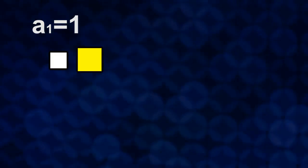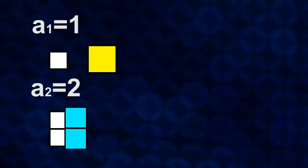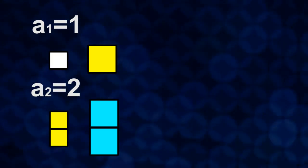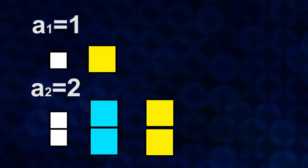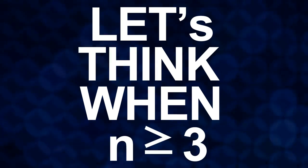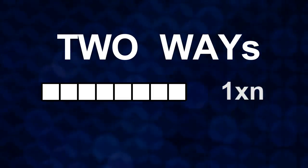First, it is trivial that a1 is equal to 1. Also, there are two ways to cover 1 cross 2 board like showed in the pictures below, so a2 is obviously 2. Now, let's think when n is over or equal to 3. Then, there can be two ways to cover 1 cross n board.